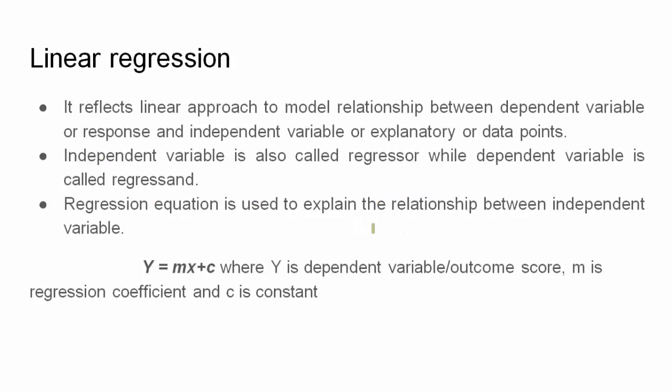Then comes the last one: linear regression. It basically has a linear equation which signifies some type of relation with the independent variable and the dependent variable. Independent variables are also called data points, or the predictor value, or regressor, whereas the dependent variable is called the outcome, target, or regressand.